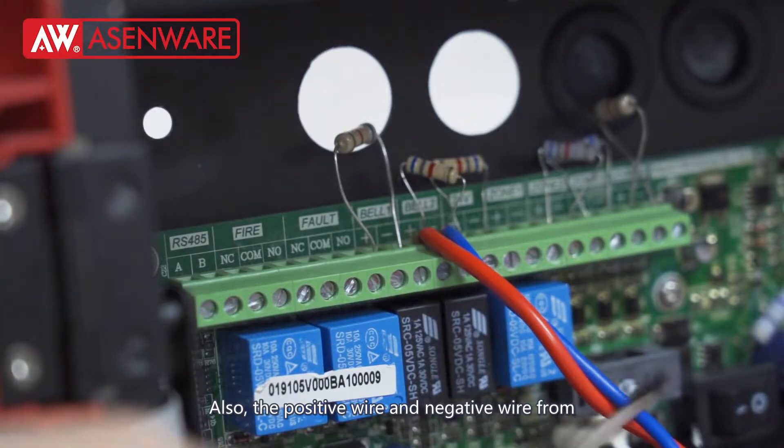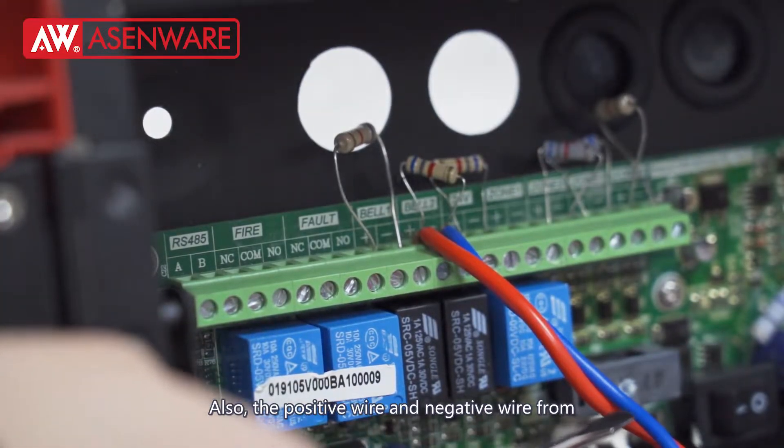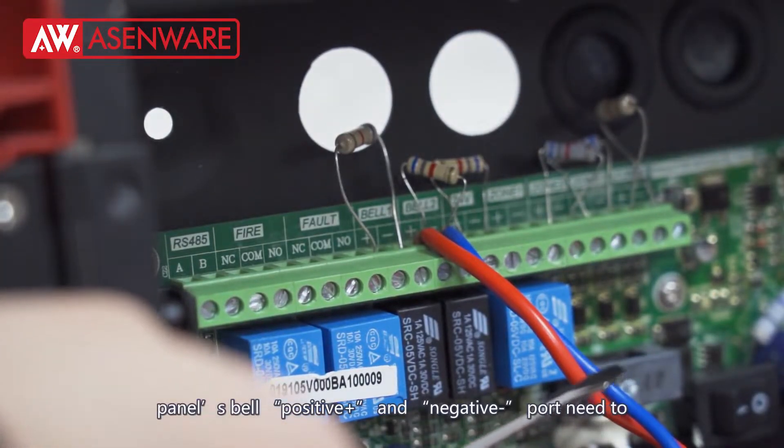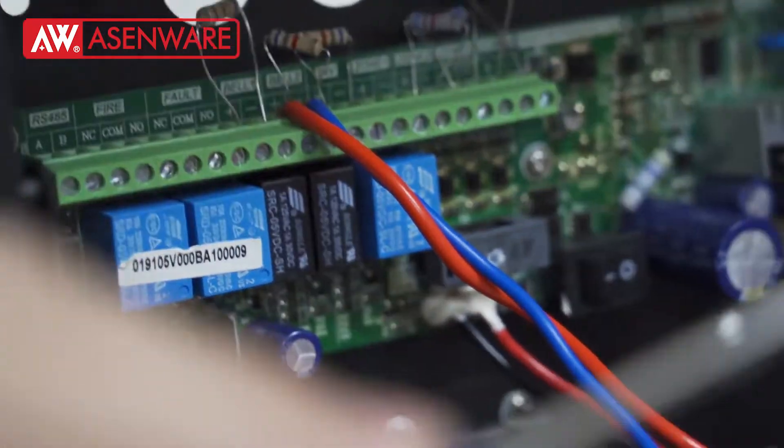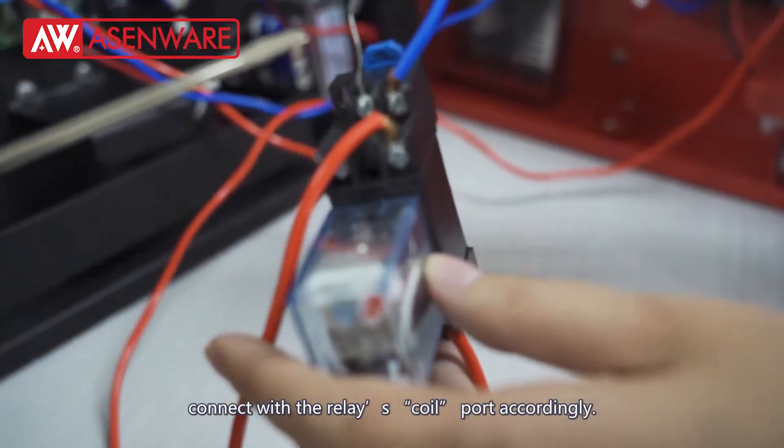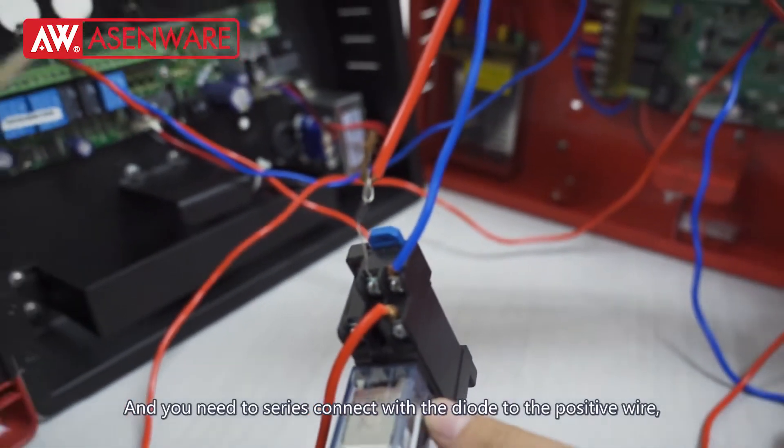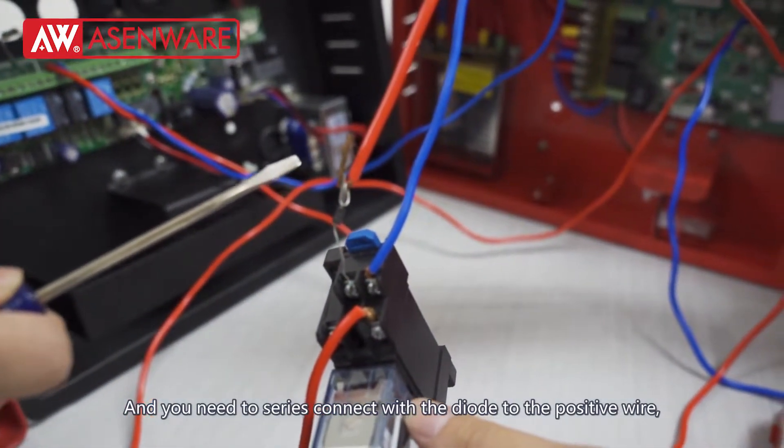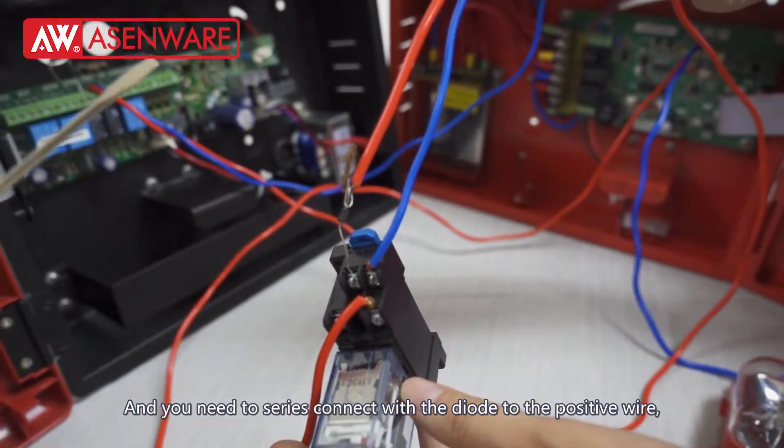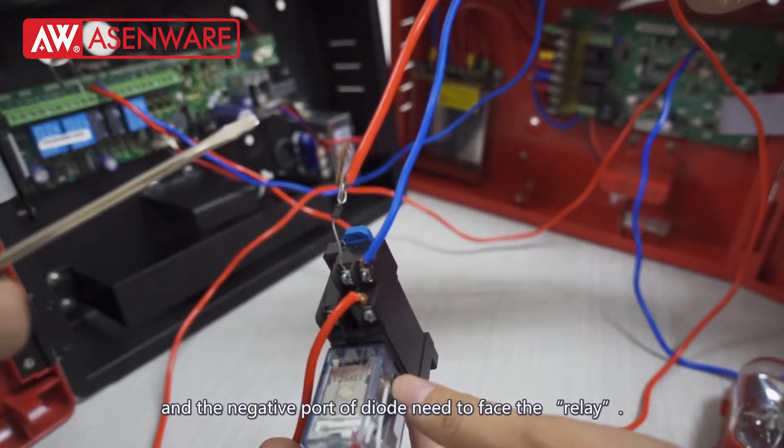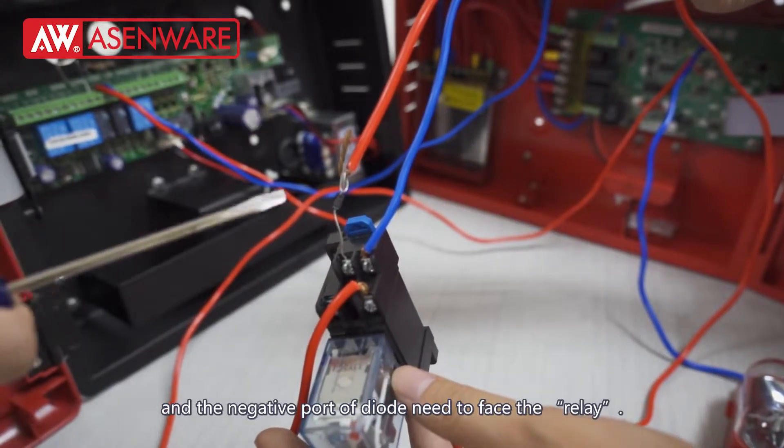Also, the positive wire or negative wire from the bell's positive and negative port need to connect with the coil port accordingly, and you need to serially connect with the diode to the positive wire and the negative port of the diode needs to face the relay.